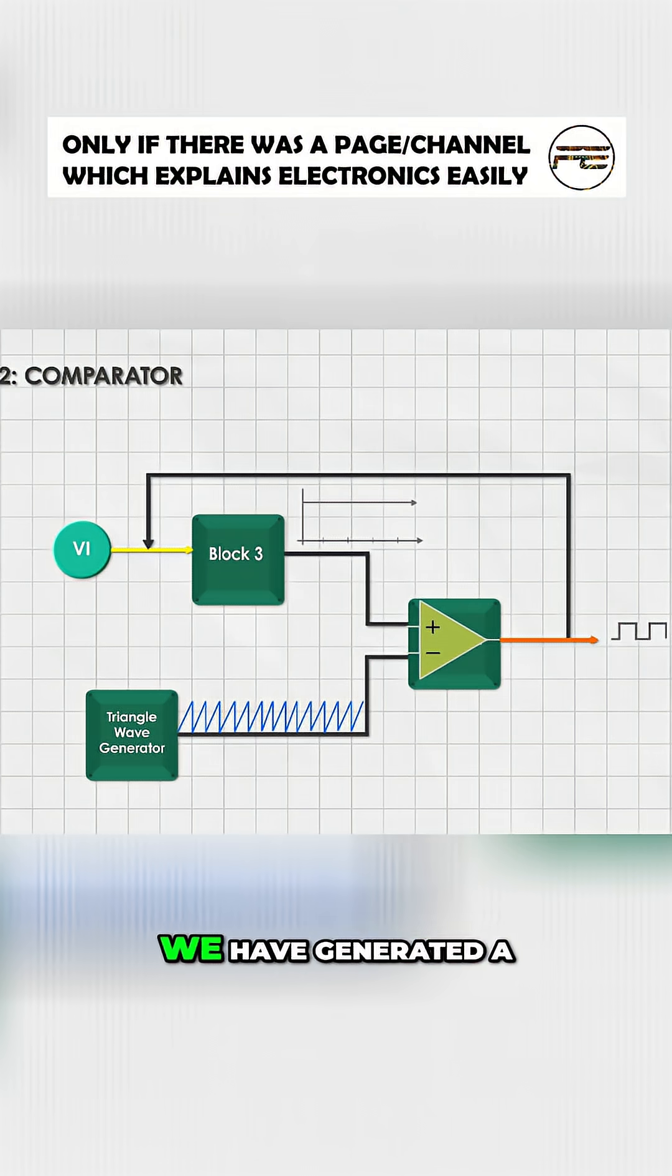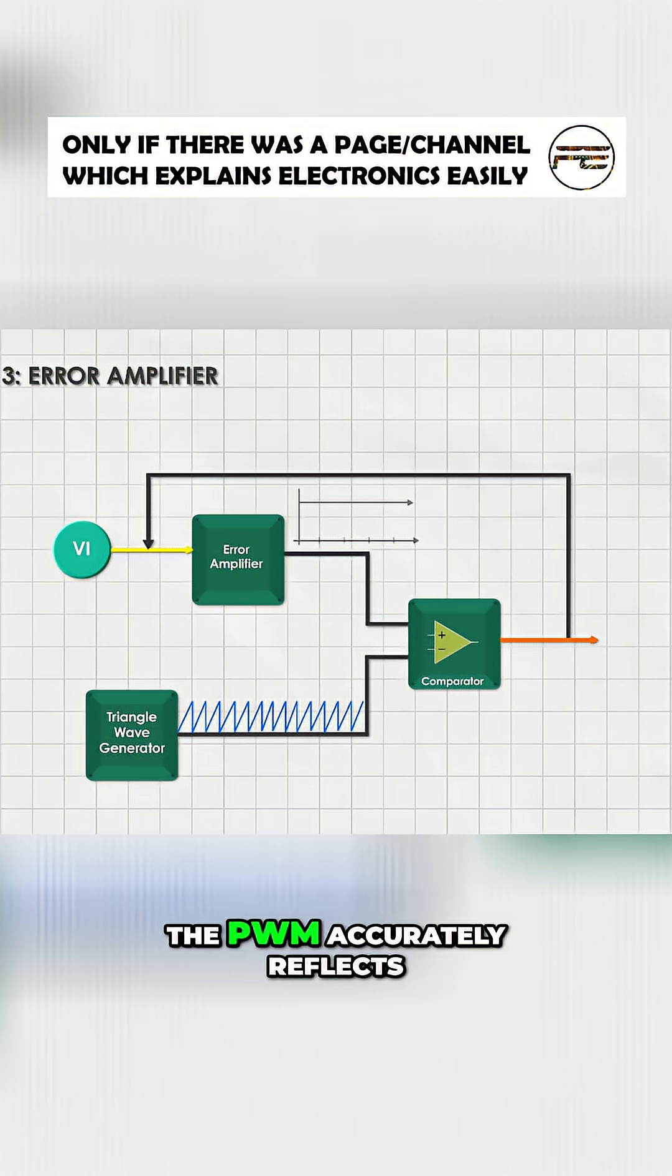And just like that, we have generated a PWM waveform. The third block ensures the PWM accurately reflects our input voltage.